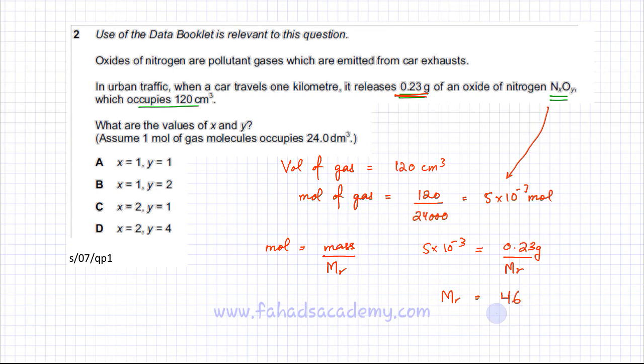So the Mr of the compound NₓOᵧ is now known. The only way the Mr would be equal to 46 is if option B is correct.